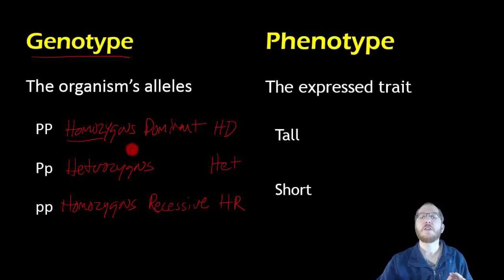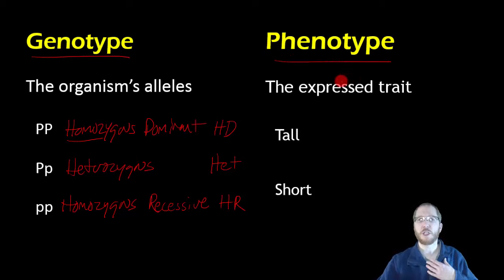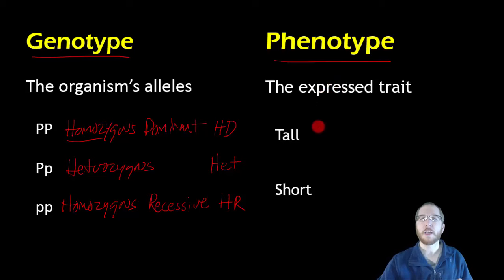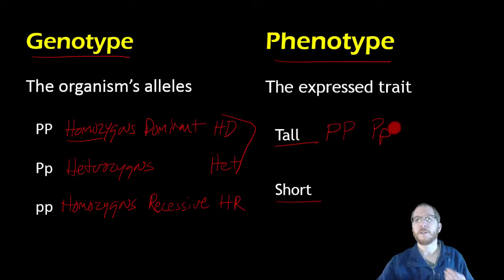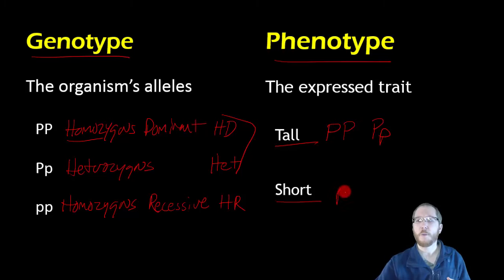Now, genotype is what their alleles are, but there aren't three different phenotypes — phenotype being what you look like, what you express. In this case, there are only two ways that the pea plant can look: it can be tall or short. It just so happens that two of these genotypes — any that have a dominant allele — are going to be tall. Short would be homozygous recessive.